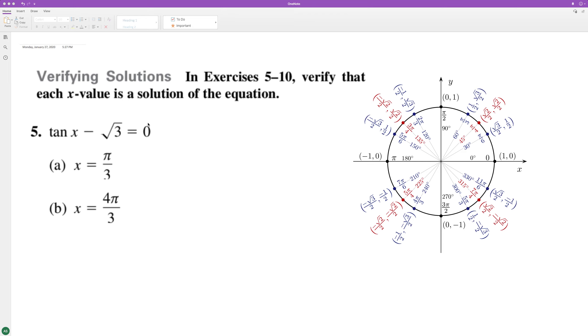To this problem, let's verify that each x value works. So first off we'll plug in pi over 3. For pi over 3 we look here. It's x is equal to 1 half, y is equal to root 3 over 2. The reason I mention that is because tangent is y over x.